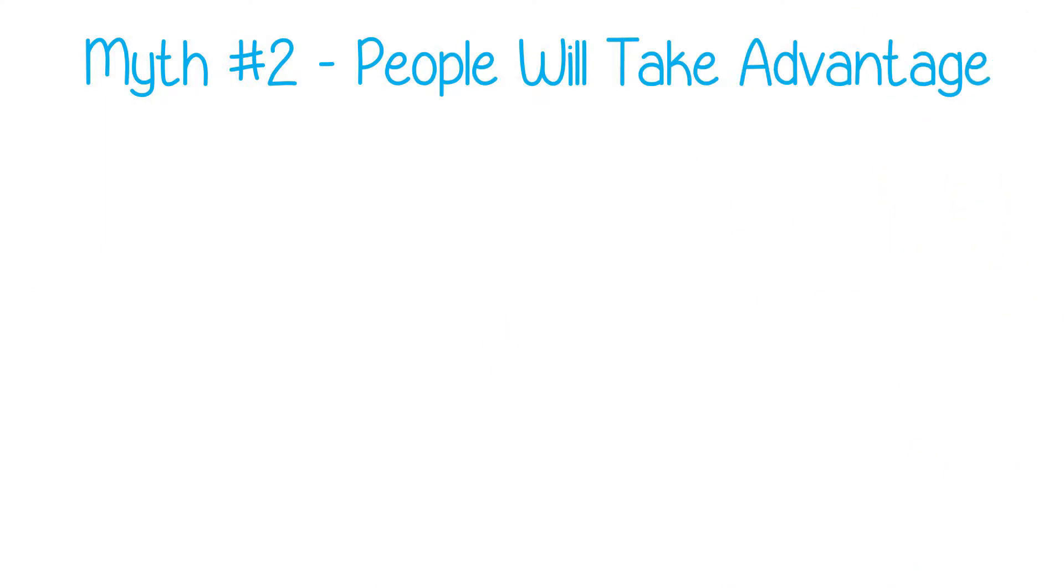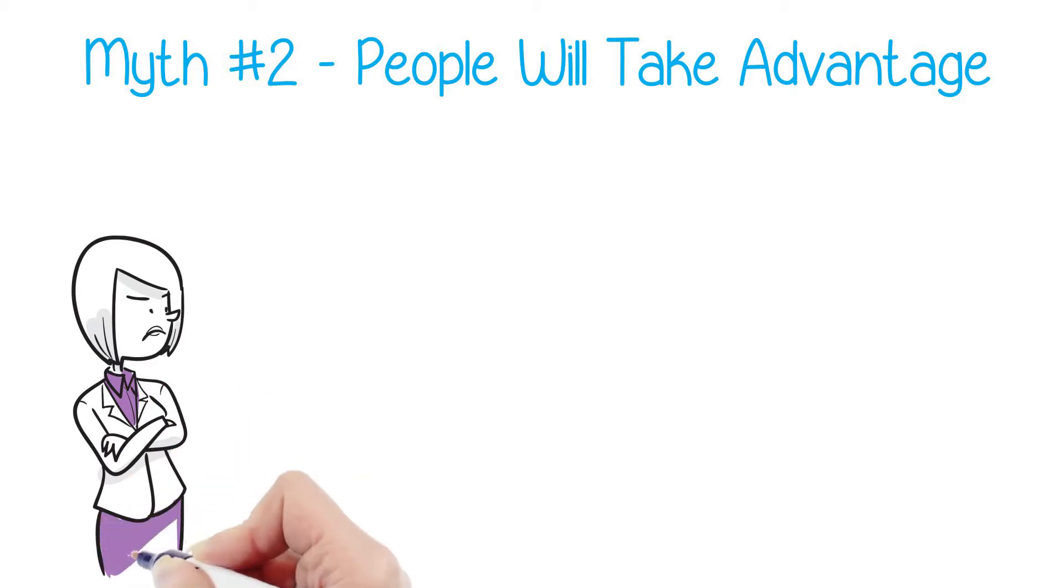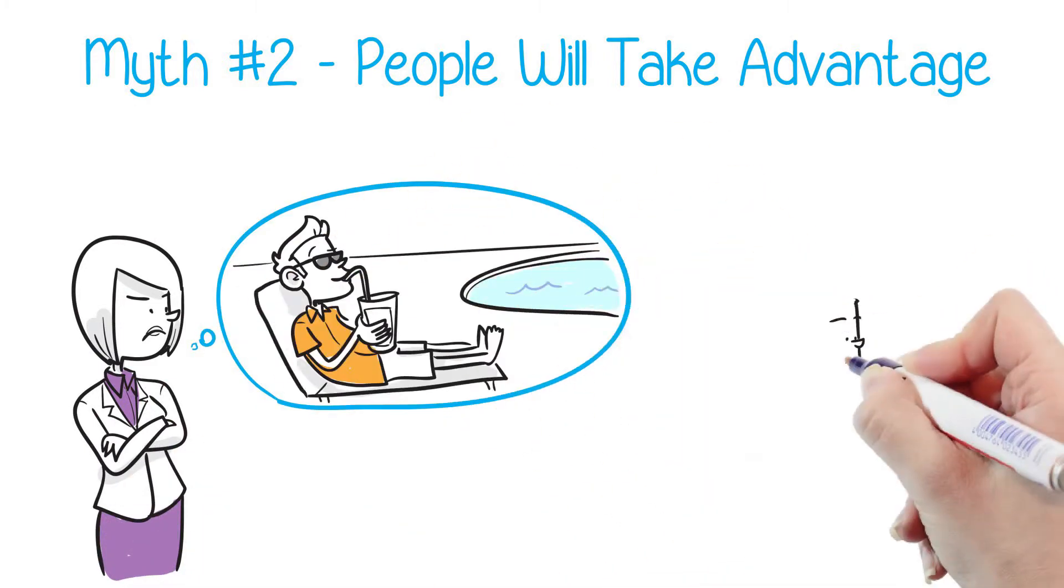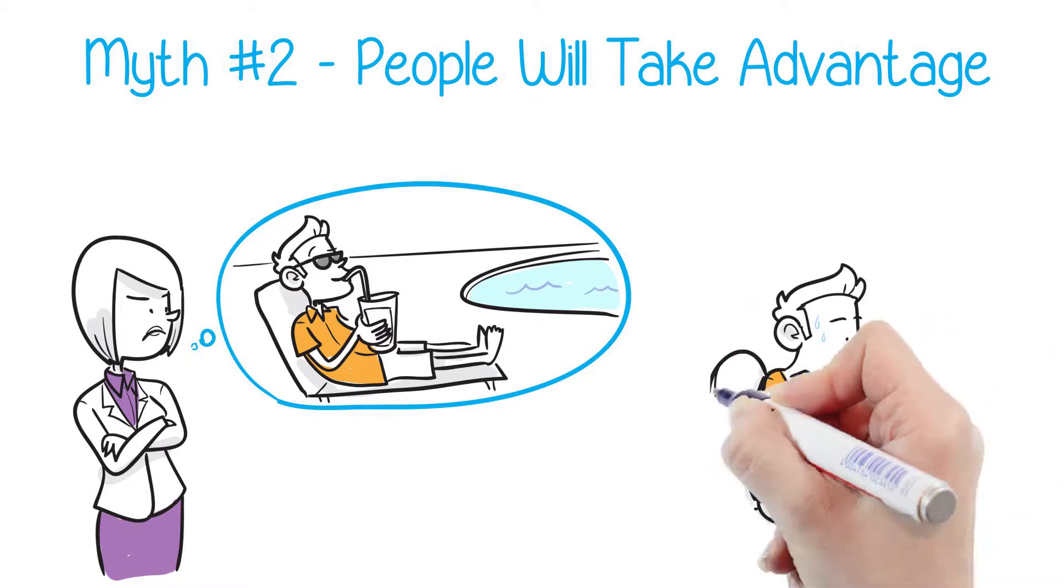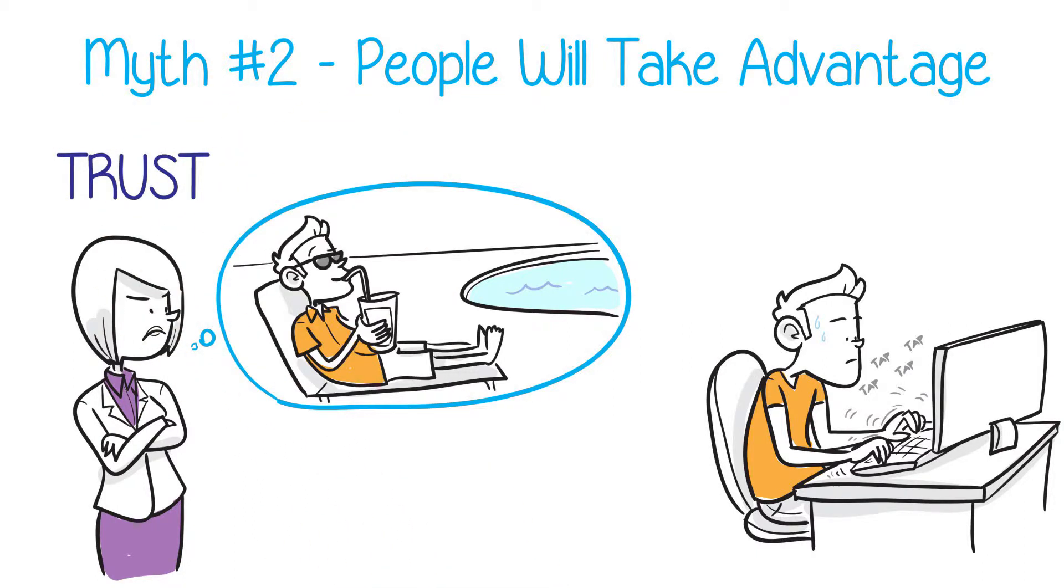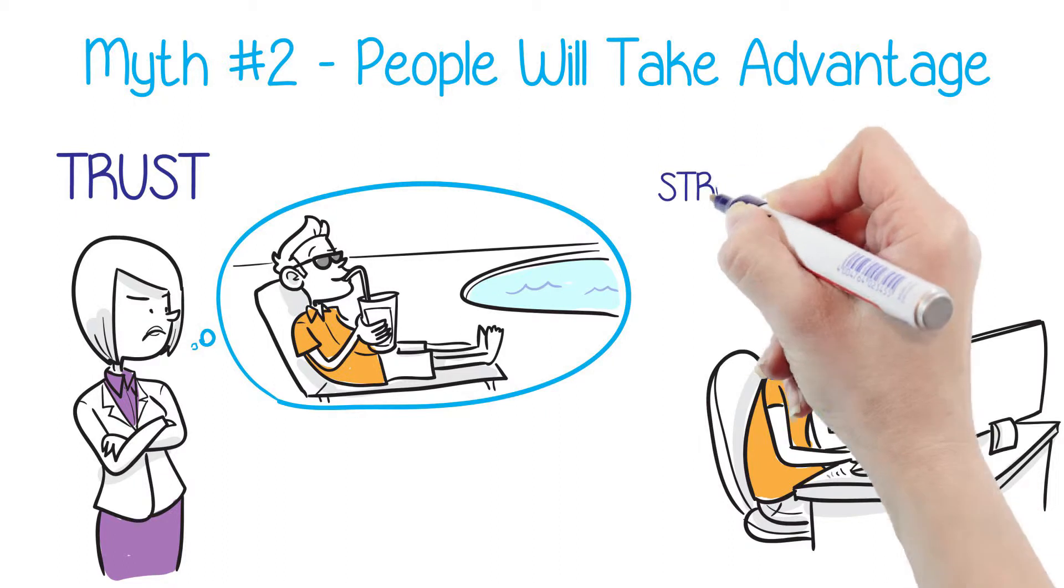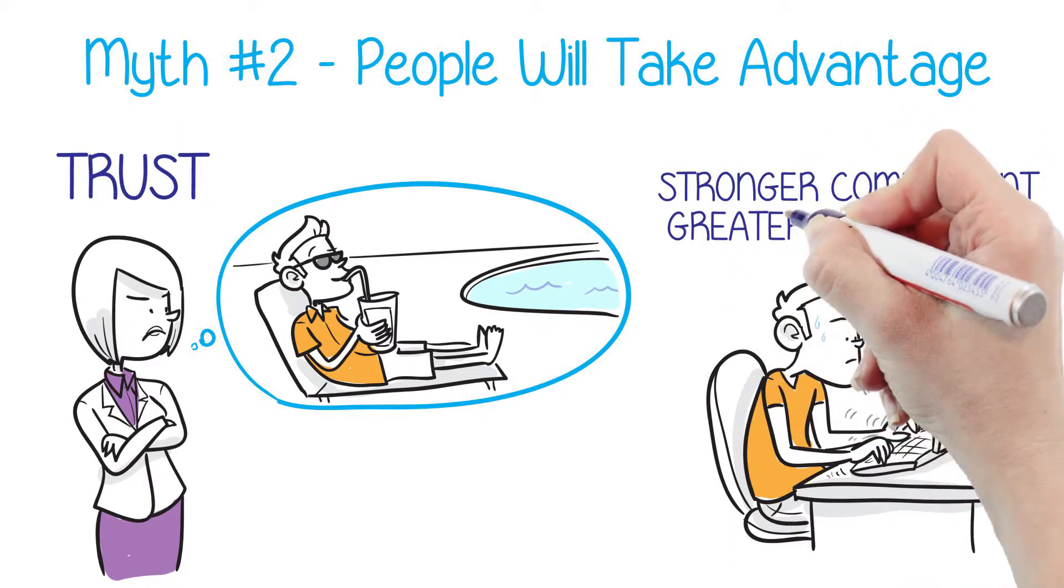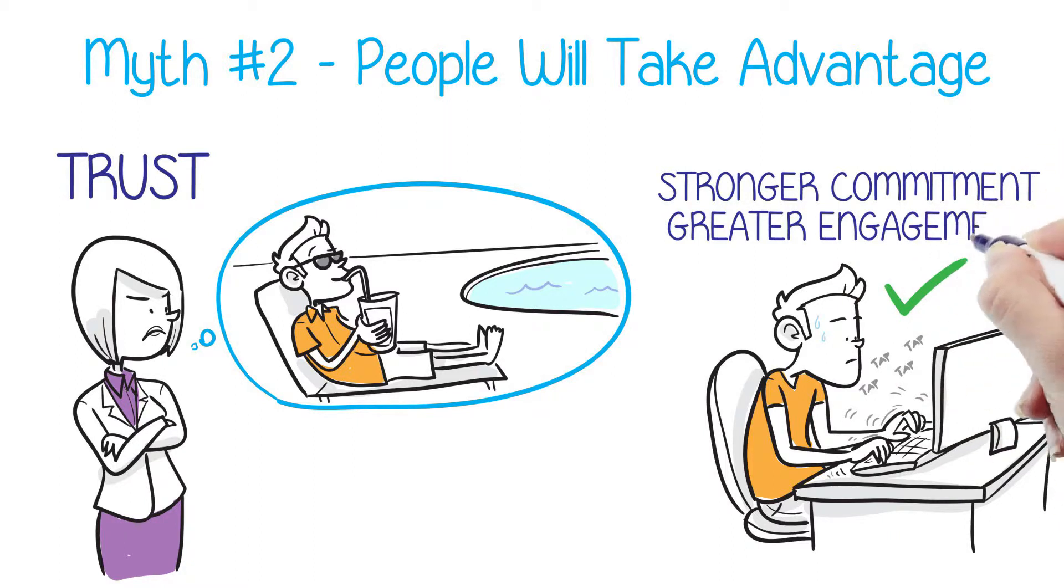Give people an inch and they will take a mile. The paradox is that rather than take advantage, people who feel valued and supported in achieving work-life integration are more likely to go the extra mile for the company. Flexible working does require trust and cooperation, but when those values are cultivated, not only does flexible work thrive, it also leads to stronger commitment and greater engagement.